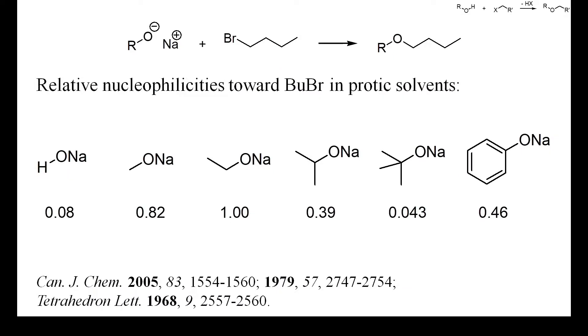On this slide, the relative nucleophilicities of various alkoxides toward butyl bromide are shown. Except for sodium tert-butoxide, all alkoxides react faster than sodium hydroxide. This low nucleophilicity of sodium tert-butoxide is caused by its steric bulkiness. Sodium and potassium tert-butoxide are therefore suitable reagents for dehydrohalogenations.